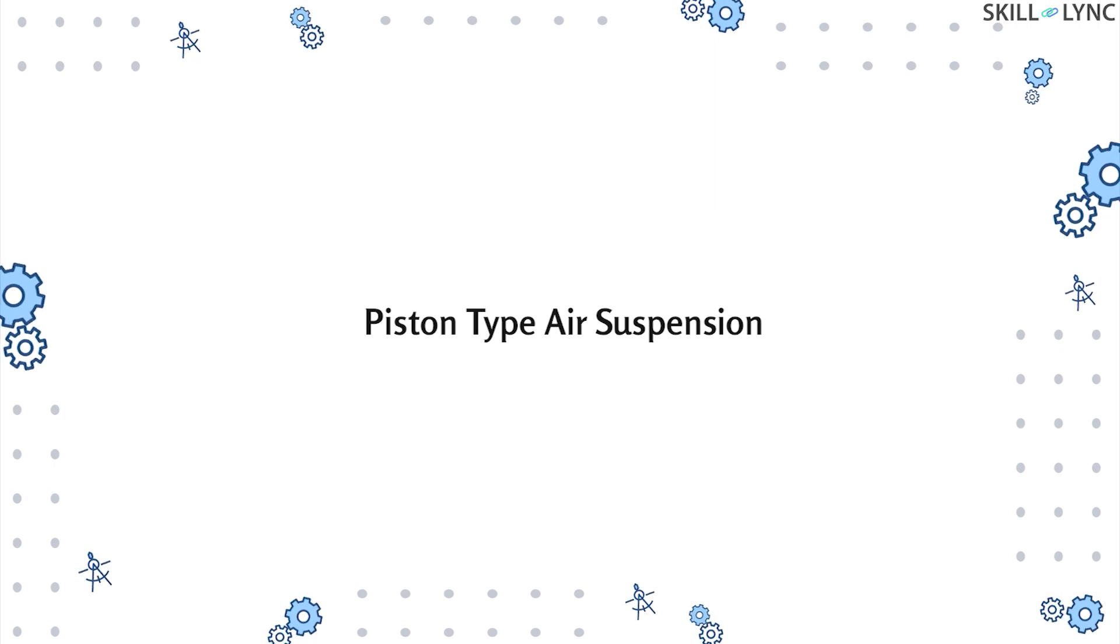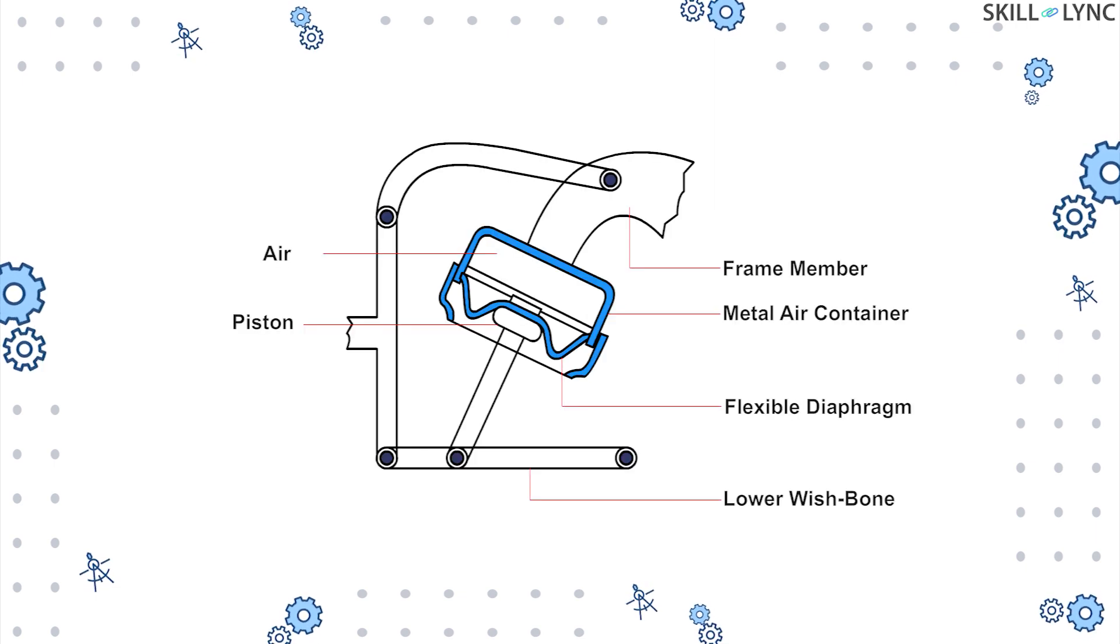The second type is the piston type air suspension. Here a metal container in the shape of an inverted drum is used. This drum is connected to the frame and a sliding piston is connected to the lower fishbone. This piston is a rigid polyamide molded component with glass fiber which withstands load and cushioning shocks. Next, a flexible diaphragm is connected to the lip of the drum and acts as a seal.